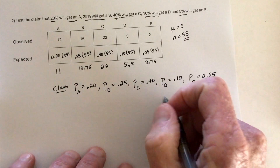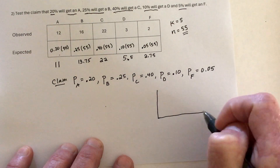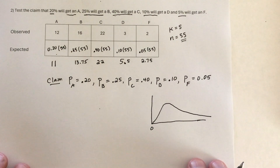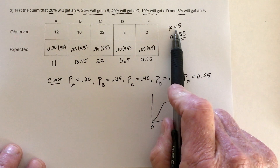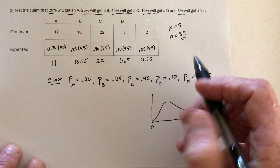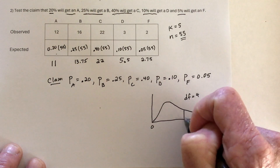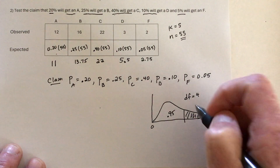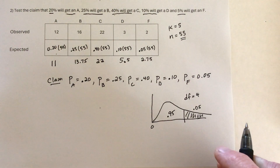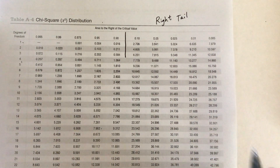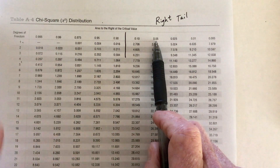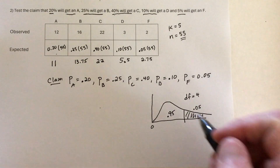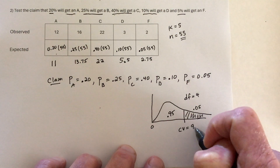The chi-squared distribution starts at 0 and is right-skewed. Degrees of freedom is again K minus 1 equals 4. Using a 95% level of confidence, the right tail is 0.05. That gives the same critical value as before — going to degrees of freedom 4 and the 0.05 column gives 9.488. So the critical value equals 9.488.